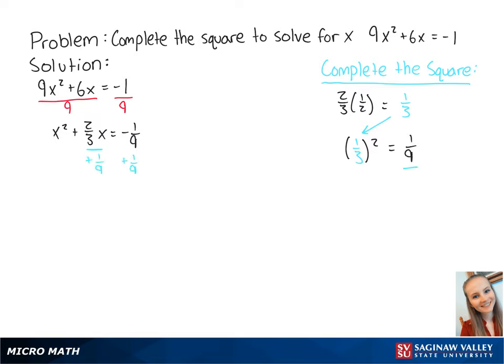Now we add 1 ninth to both sides of the equation to get x squared plus 2 thirds x plus 1 ninth equals 0. Now we can complete the square to get x plus 1 third squared equals 0.